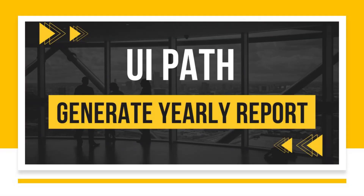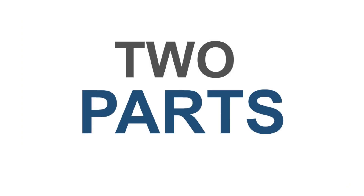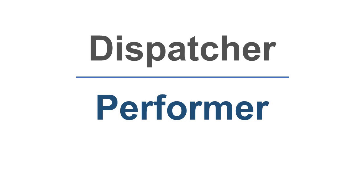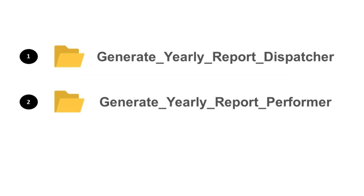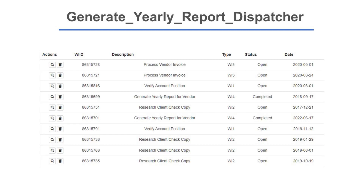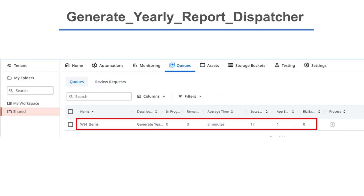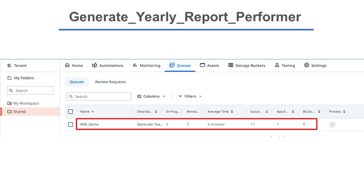In this video we will work on another advanced exercise of UiPath: Generate Yearly Report. This exercise comprises two parts — the dispatcher and the performer — so we will be creating two projects. The first is the dispatcher, whose job is to extract the work items from System One, filter them, and add them to the Orchestrator queue.